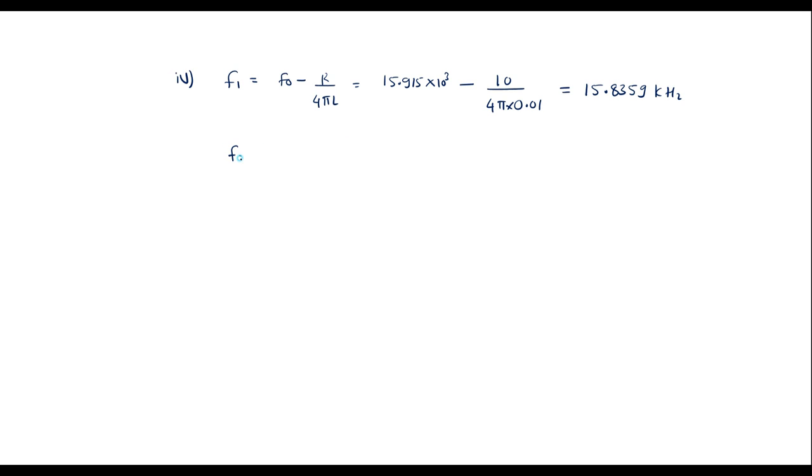Similarly, f₂ is equal to f₀ plus R / 4πL, which is 15.915 × 10³ plus 10 divided by 4π × 0.01. Solving this, we get f₂ equal to 15.955 kilohertz.